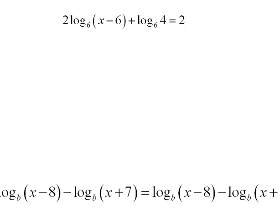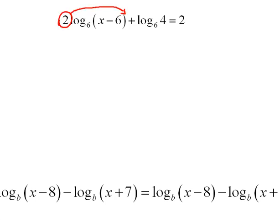Let's try another one. Here we have 2 log base 6 of x minus 6, plus log base 6 of 4, equals 2. This is a very different animal. We can't just drop the logs because we've got a log plus a log. But we have a rule that allows us to work with logs separated by addition. The first thing I'm going to do is take that factor and put it back up as an exponent before doing anything else.